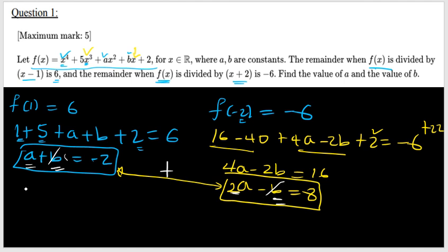So a plus 2a will be 3a, which is equal to negative 2 plus 8 will be 6. So divide by 3 both sides. So a is equal to 2. That is the a value.